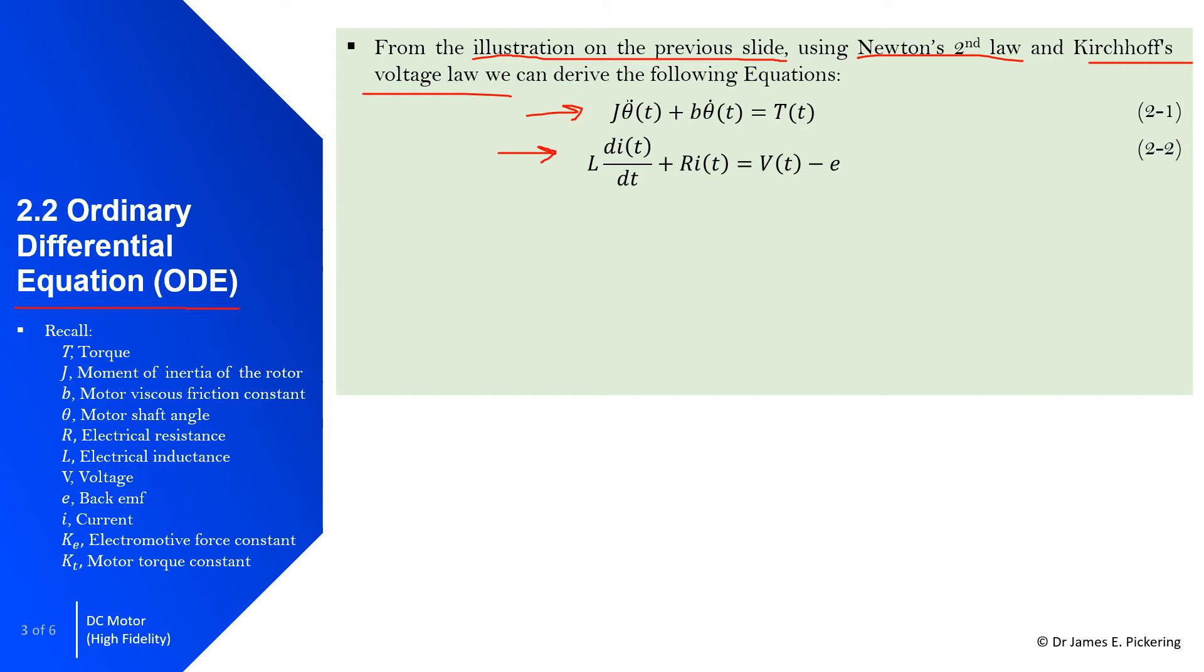Where J is the moment of inertia of the rotor, theta double dot is the angular acceleration. And this here, equation 2-1, is effectively a second order equation, plus B which is the motor viscous friction constant, and then here we have the angular velocity is equal to the torque. Then we've got the electrical equation where L is the electrical inductance, so rate of change here, so this is a first order equation, where I is the current, the rate of change of current, plus resistance times the current term here, which is equal to the voltage take away the back EMF.